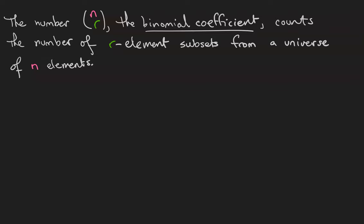In the last video we were introduced to the number n choose r, also called the binomial coefficient, that counts the number of r-element subsets from a universe of n elements. And this subset interpretation is going to be really important in unlocking the power of these numbers.